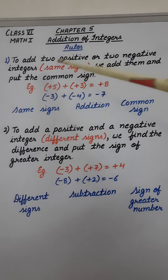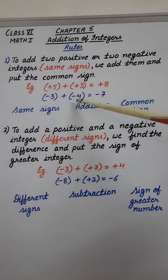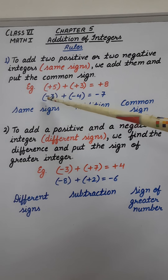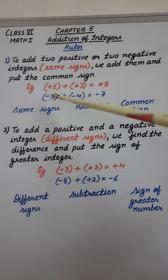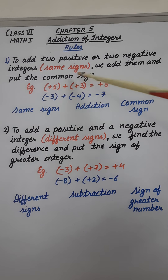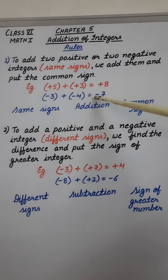Again, they have the same signs — this is also negative, this is also negative. So we will add both the integers: 3 plus 4 is 7. But the sign will be the common sign of both the integers, which is minus. That is why the result is minus 7.